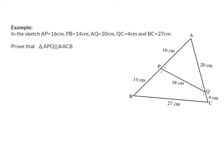In our example, we are given information about the side lengths but no information about the angle sizes. So when asked to prove these two triangles similar, we are going to focus on the ratios of the sides rather than proving angles equal. We need to prove that the small triangle APQ is similar to triangle ABC.